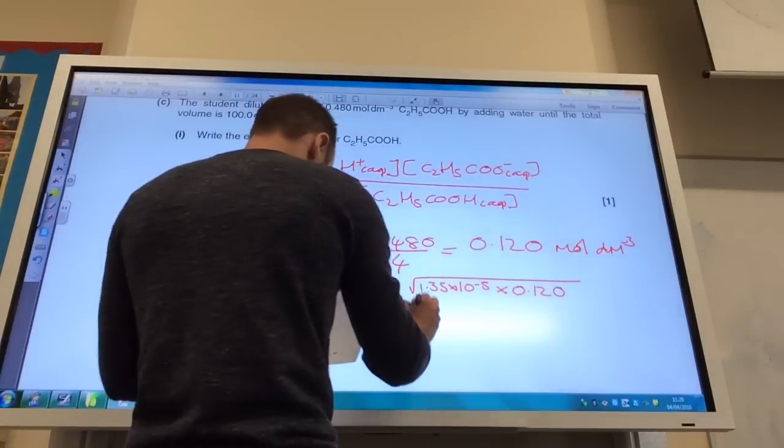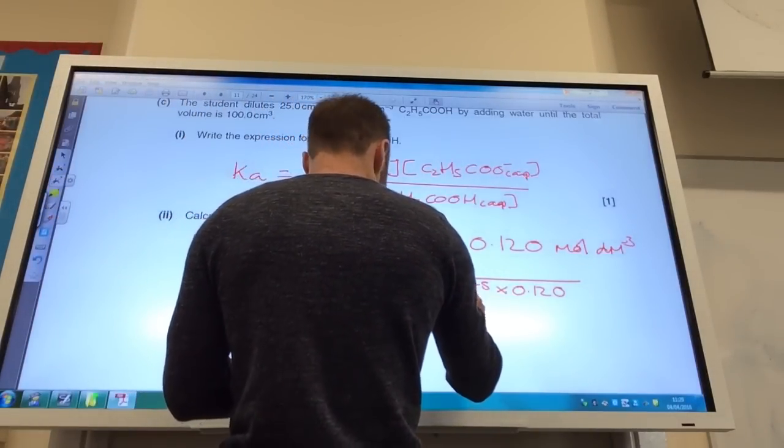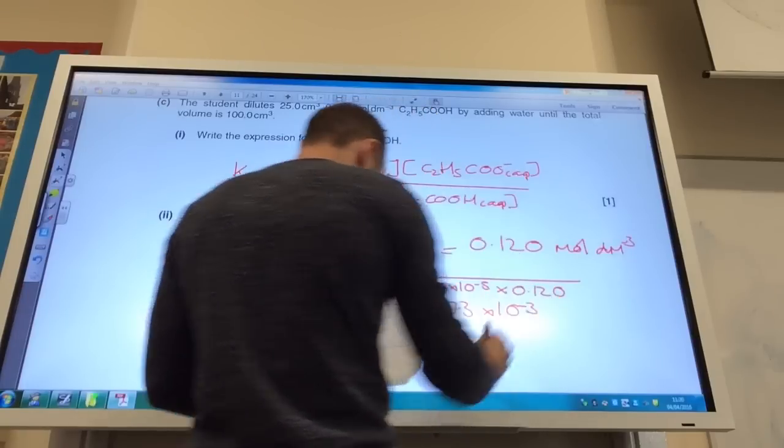So I do that square root of it and I should get to 1.273 times 10 to the minus 3.